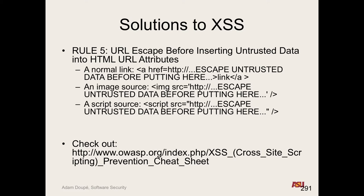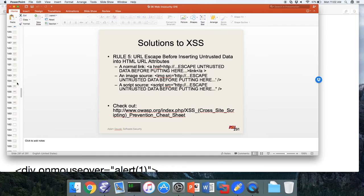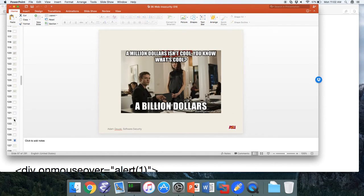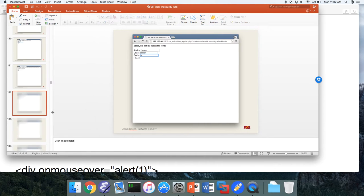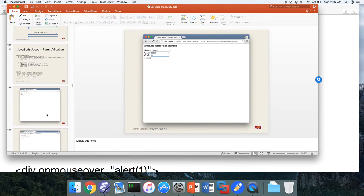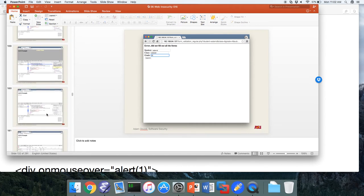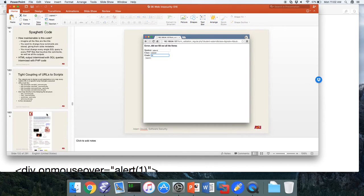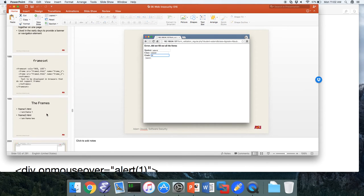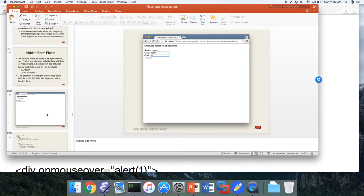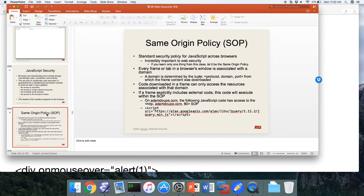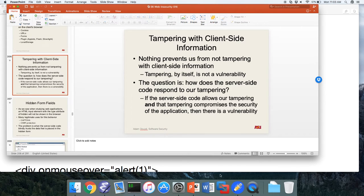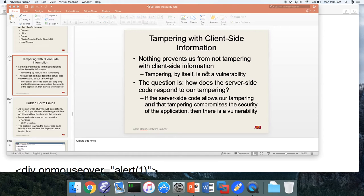All right. We are going to look at some other web vulnerabilities. I just need to find where they are. We'll skip re-reviewing the same origin policy. I need to turn on one of my VMs — I think I have an actual example here.